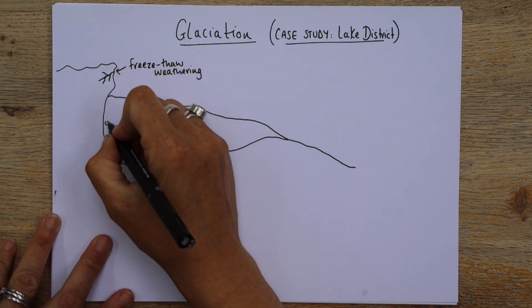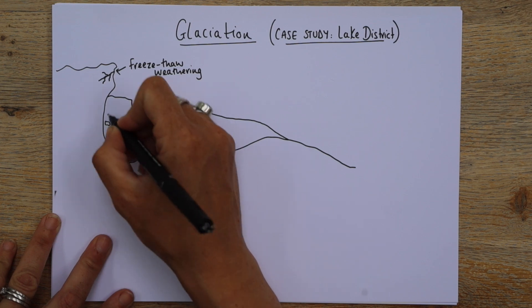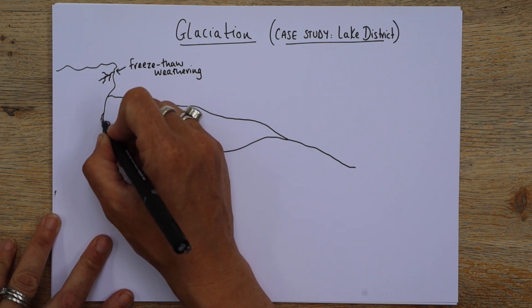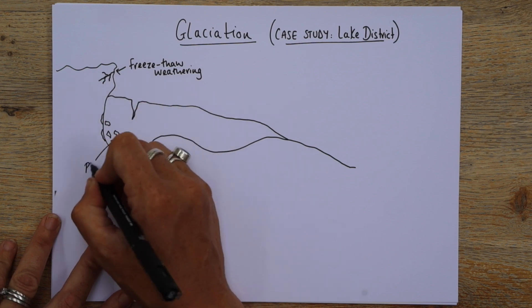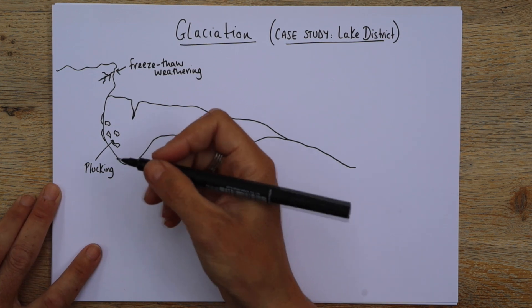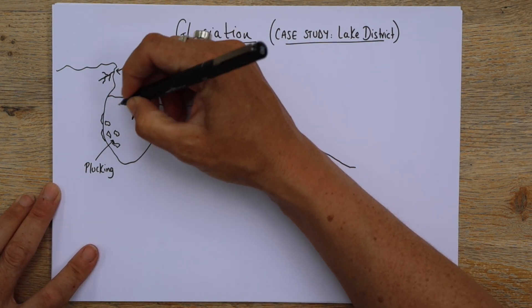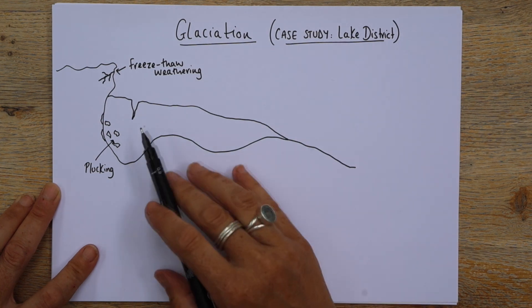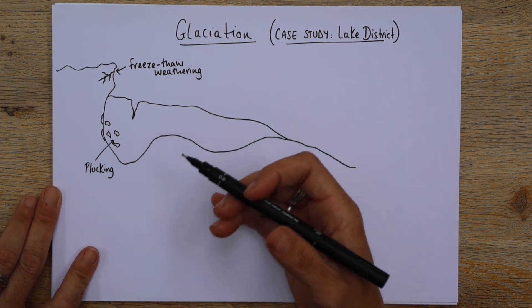Now the other thing that's happening, if you draw some random sort of shards of rock, these bits of rock, if you imagine, have come from this back wall. Now this is called plucking. Okay, plucking. Now, essentially what's happening is the glacier, as it is moving this way, moving this way, it's picking off pieces of rock. And that's called plucking.